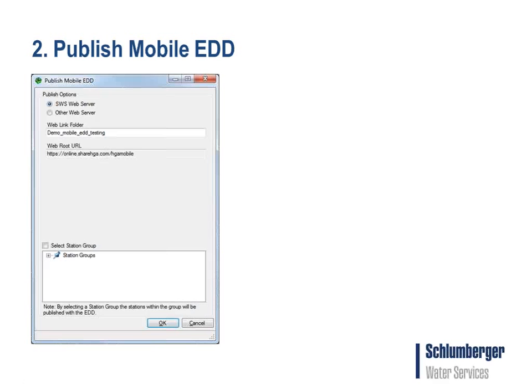We also have an option to include a station group when you publish your mobile EDD. If you are publishing an EDD for field personnel going back to the same stations to take measurements or collect samples, you can create a station group within HGA and use it when publishing the mobile EDD. That way, the forms will have the list of stations the field personnel need to go to. If you are creating new stations, you also have that option within the forms. You can select a station group to provide a list of stations, or ignore that option if you prefer.